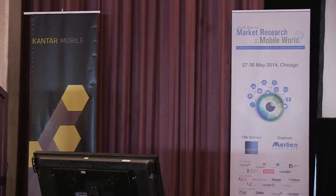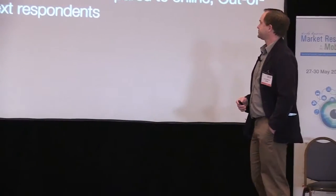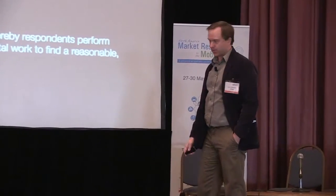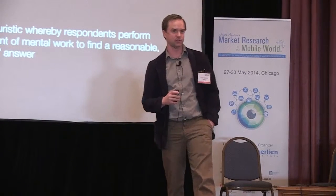A little bit about this study: mobile in-context respondents are less likely to exhibit satisficing and social desirability bias in their survey responses compared to online out-of-context respondents. When we say online respondents, we are very specifically talking about people who are not in context — being asked when they're at home in their living room, as opposed to people being asked in the environment close to that moment of truth, about to make a purchase in a store. Satisficing is a cognitive heuristic whereby respondents perform the least amount of mental work possible to find a reasonable, good enough answer.